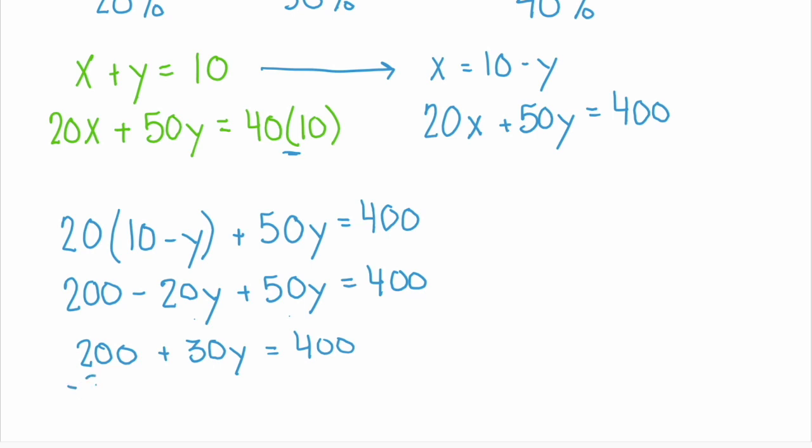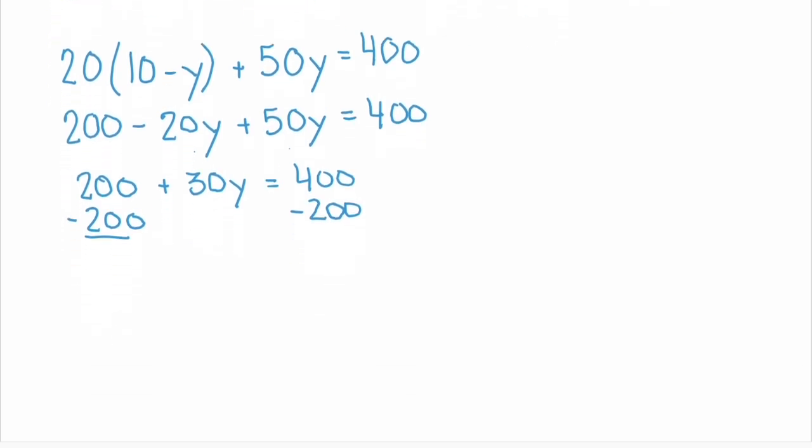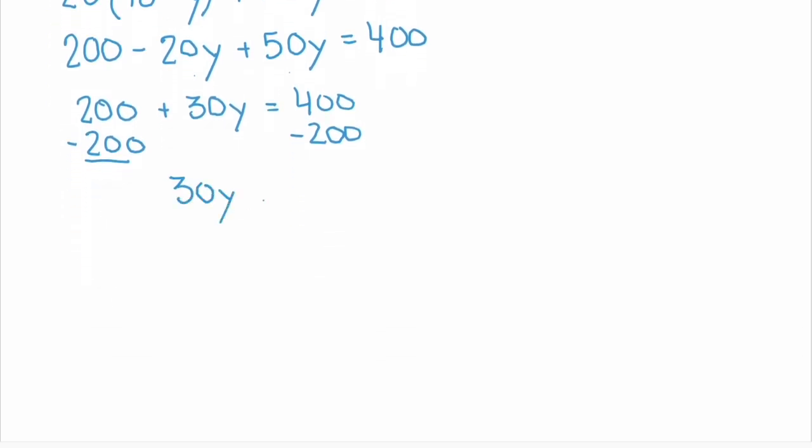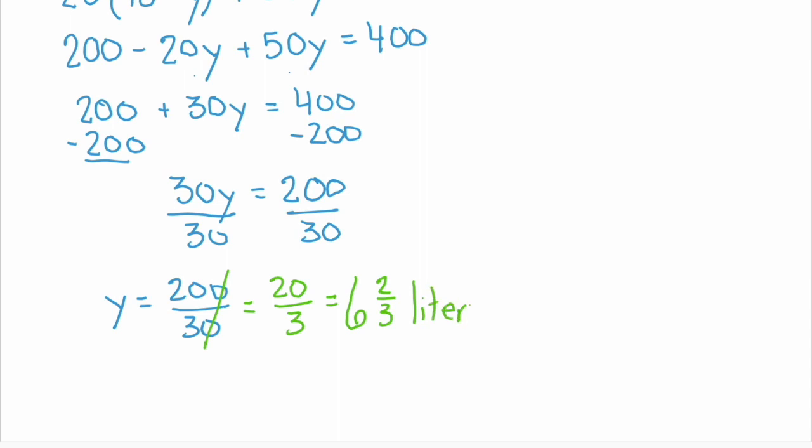Now let's isolate y. First, we'll subtract 200. So 30y equals 200. And divide by 30. So we know that y equals 200 over 30. And the zeros simplify out. So we have 20 over 30, or six and two thirds. And we know that's liters. So we need six and two thirds liters of y.